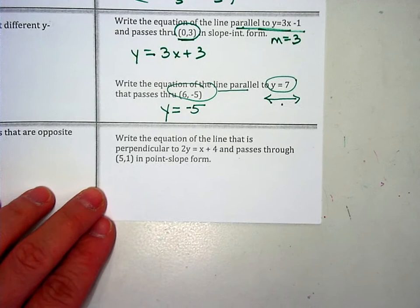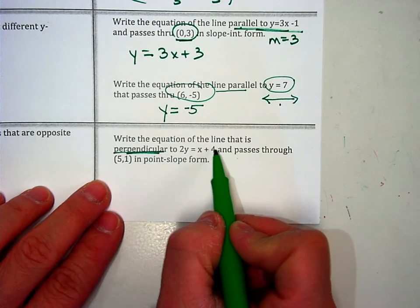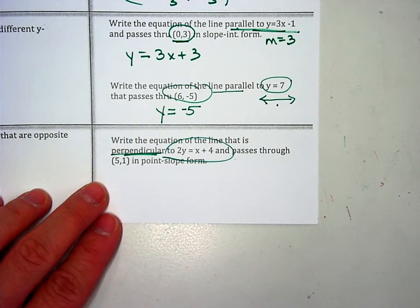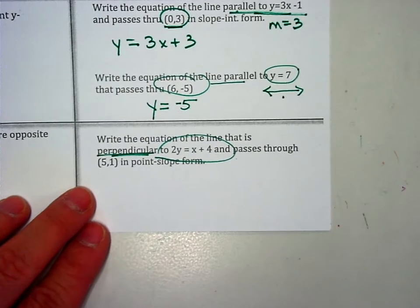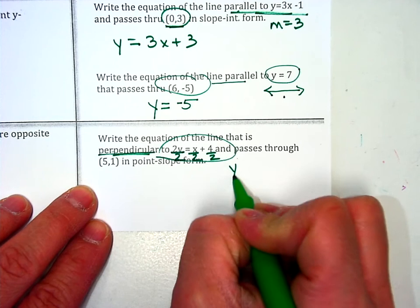Okay, last topic is perpendicular lines. I need to find the perpendicular slope, but if I look at this equation, this is not in slope-intercept form, so you must get y by itself first. So I'm going to divide by 2 first, and you're going to end up with this.